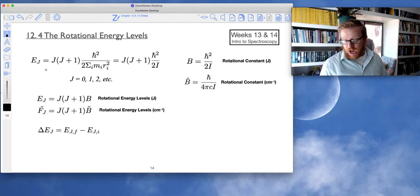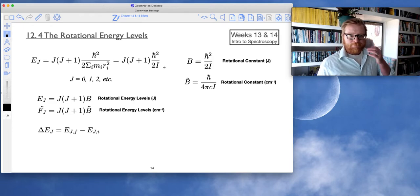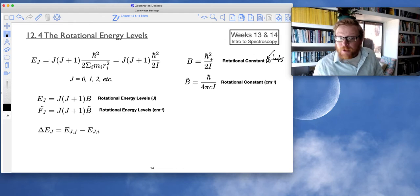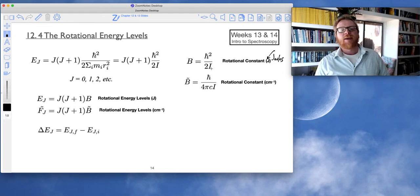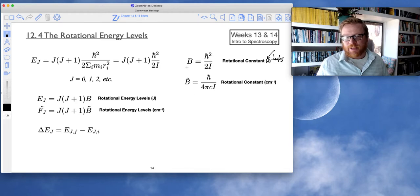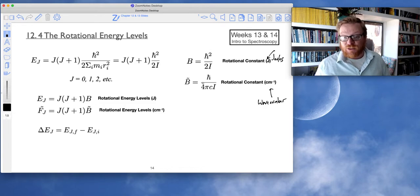So let's move on. So we note that E sub J equals J times J plus 1 h bar squared over moments of inertia. So as it turns out, these collection of constants, h bar squared over 2i is what we call the rotational constant, and this is given in joules. So if I use kilograms and meters squared and joules for h bar, I'll have b in joules.